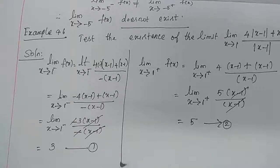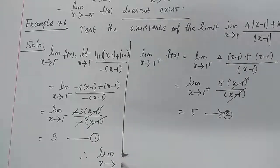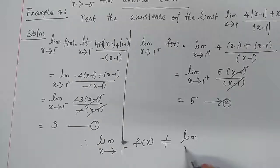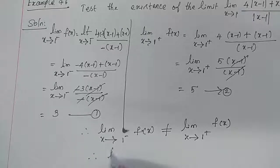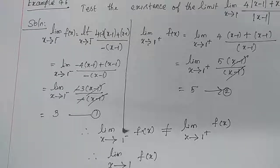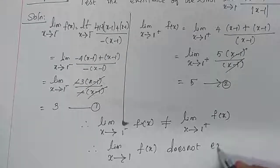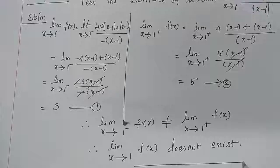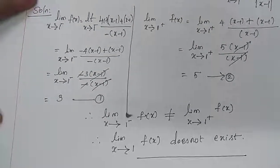From equations 1 and 2, they are not the same (3 ≠ 5). Therefore, lim (x→1⁻) f(x) is not equal to lim (x→1⁺) f(x), which means the limit does not exist. Conclusion: lim (x→1) f(x) does not exist. Example 9.6 is complete. Thank you.